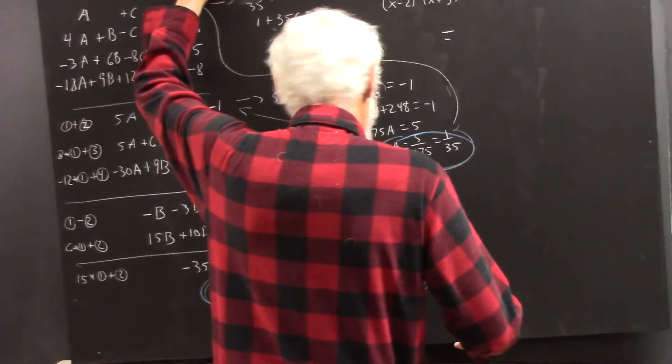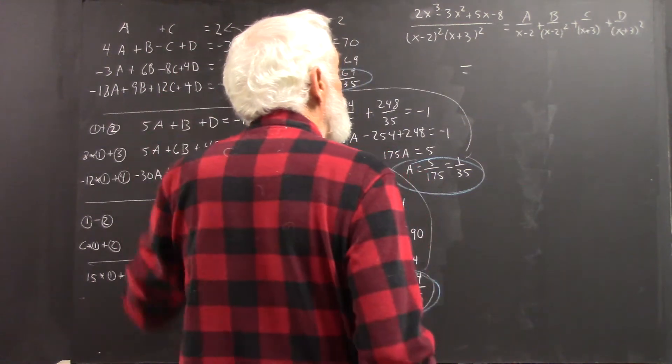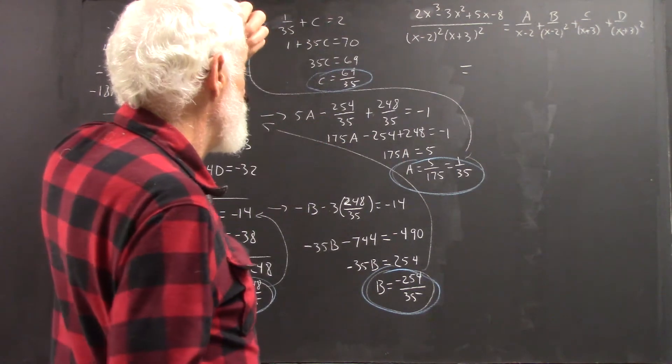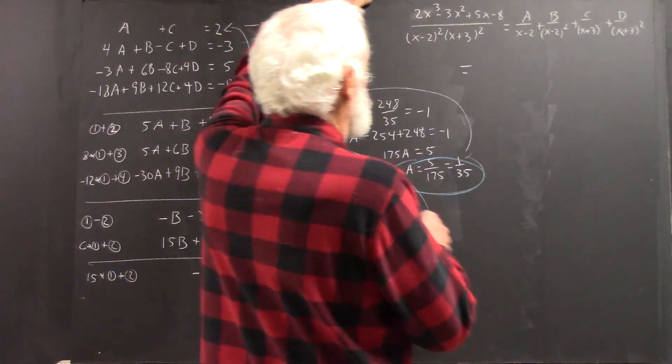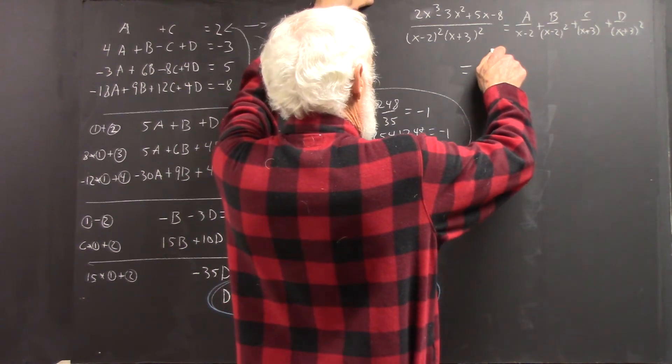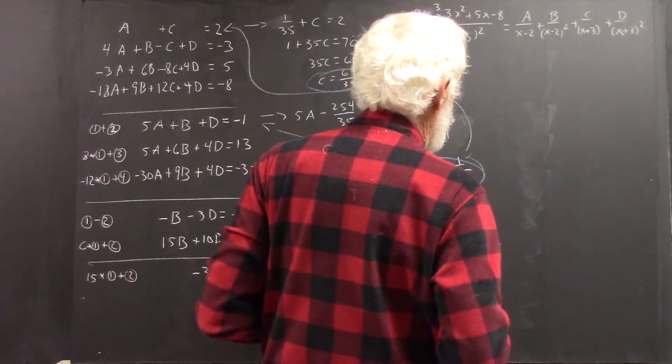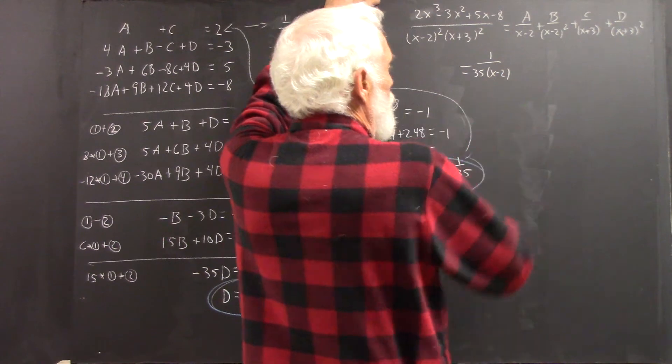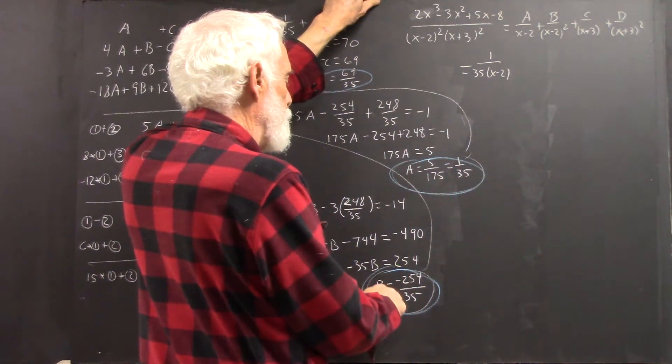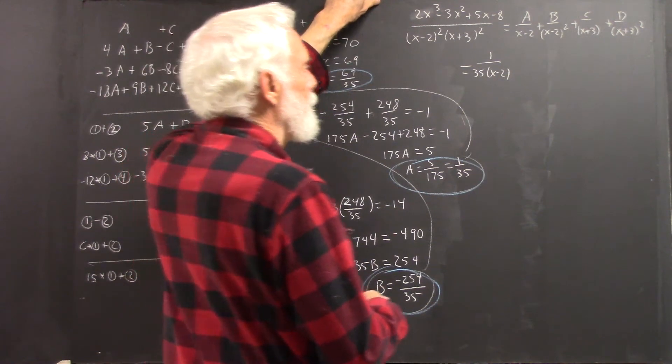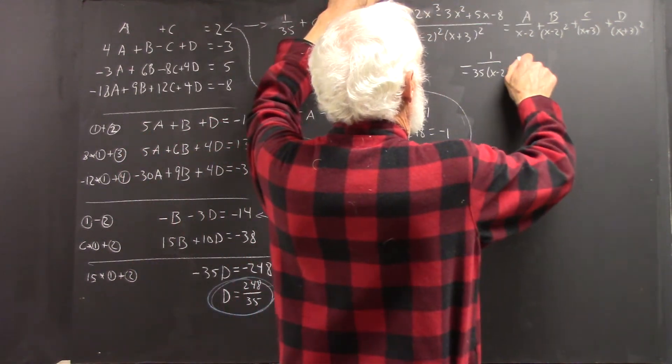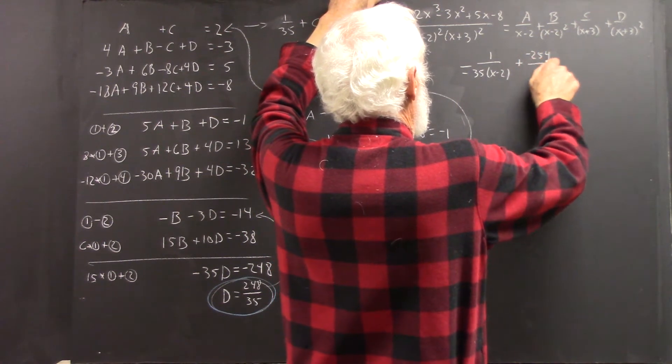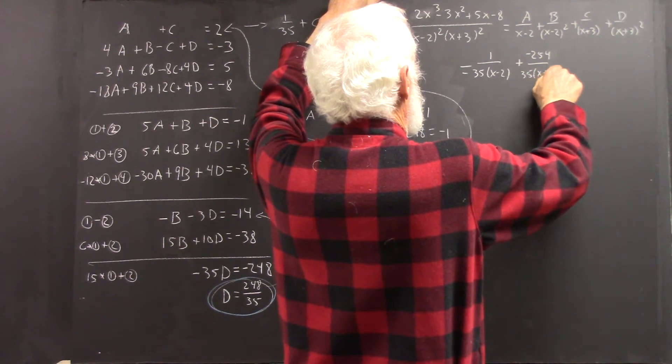And I actually kind of doubt it, but I think there's a possibility. So, A is 1 over 35, so A over X minus 2 would be 1 over 35 times X minus 2. B is negative 254 over 35, so B over X minus 2 quantity squared will be negative 254 over 35 times X minus 2 squared.